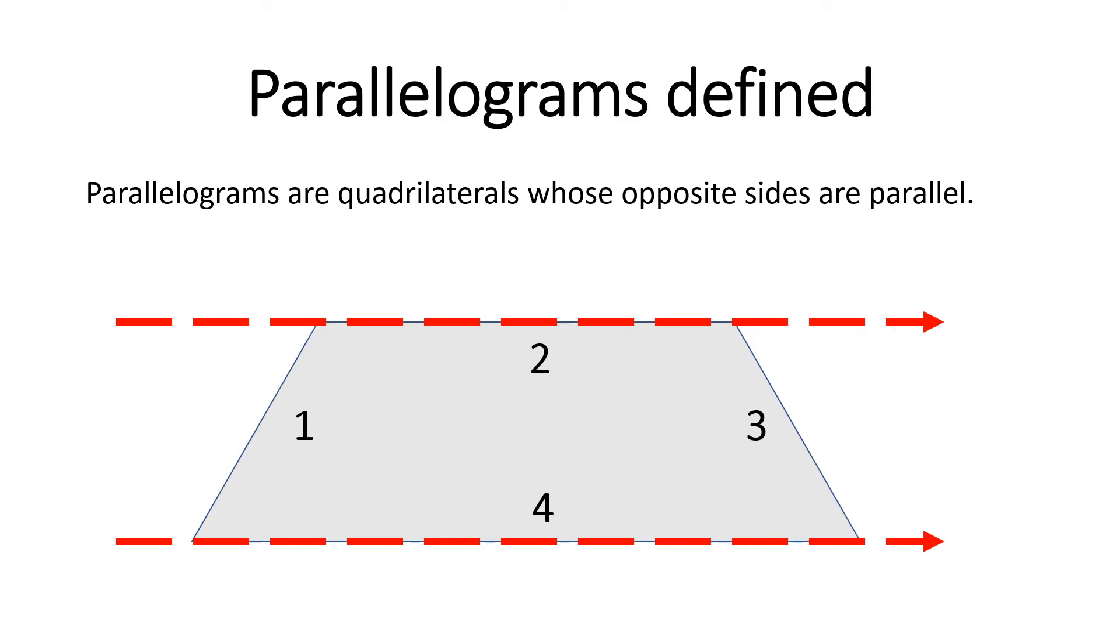Now this shape has four sides, so it's a quadrilateral. But let's look at sides one and three. If we draw imaginary lines, these lines will eventually meet. They are not parallel.